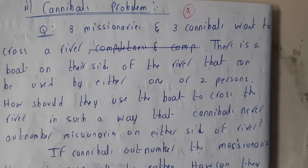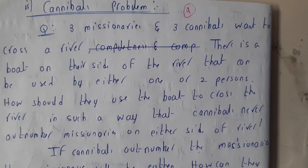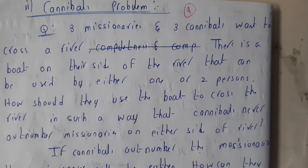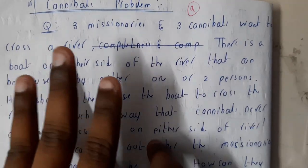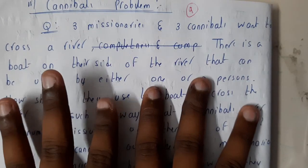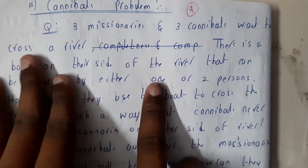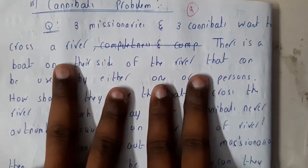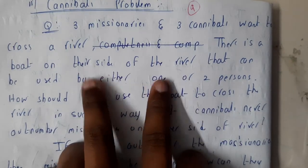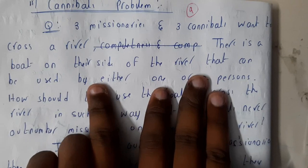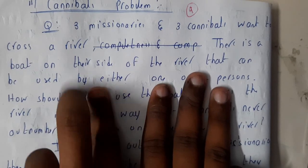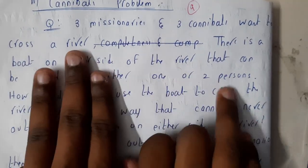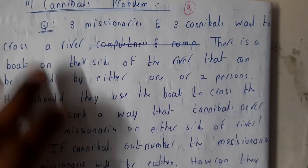Hello guys, we are back with our next lecture. In this lecture let us go through one of the most popular problems, that is the Cannibals problem. So basically cannibals are some kind of dangerous creatures. The question will be given in this way: we are having three cannibals and three missionaries. If the number of cannibals is more than missionaries, the cannibals will be eating the missionaries. So if they are three-three it's fine, two-two it's okay, one-one it's okay. The missionaries should be more than or equal to the cannibals.